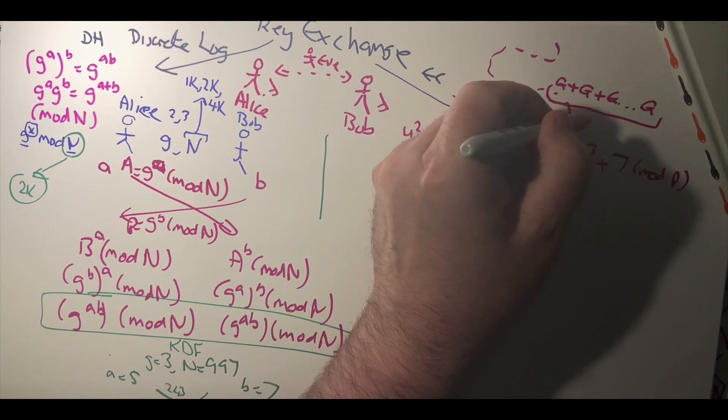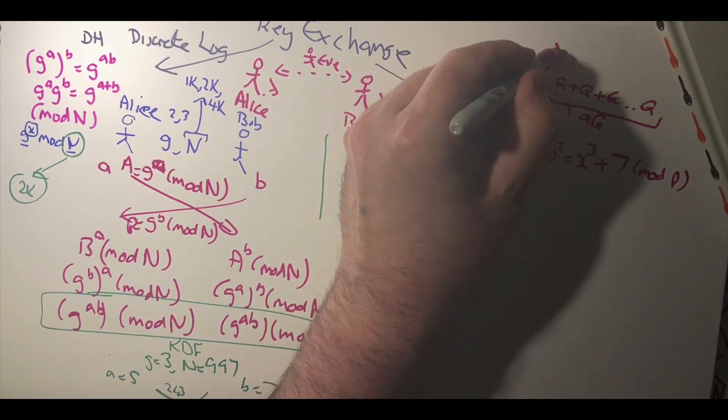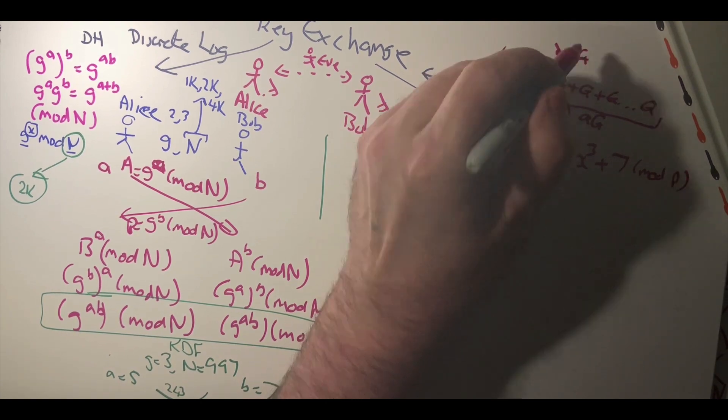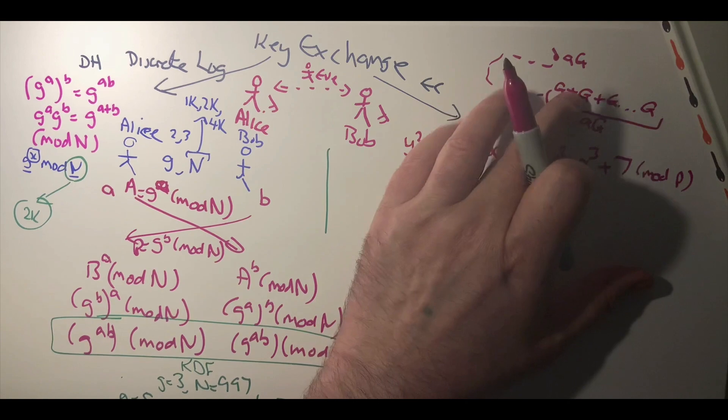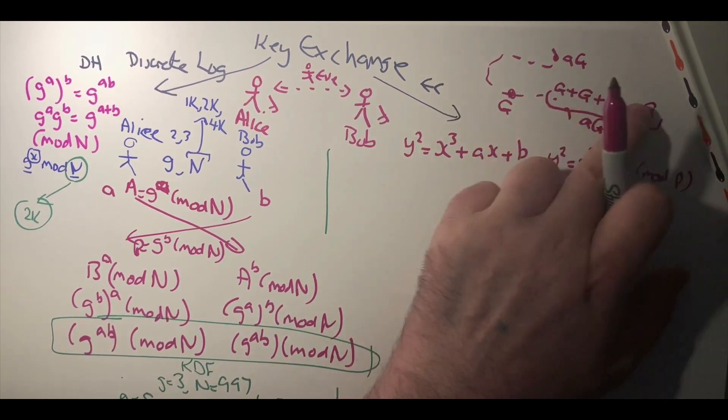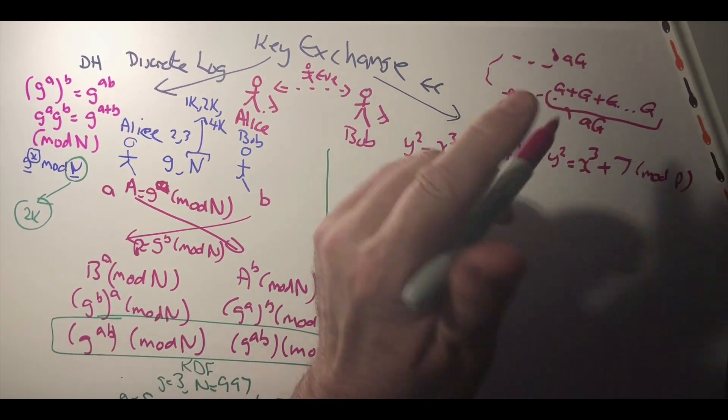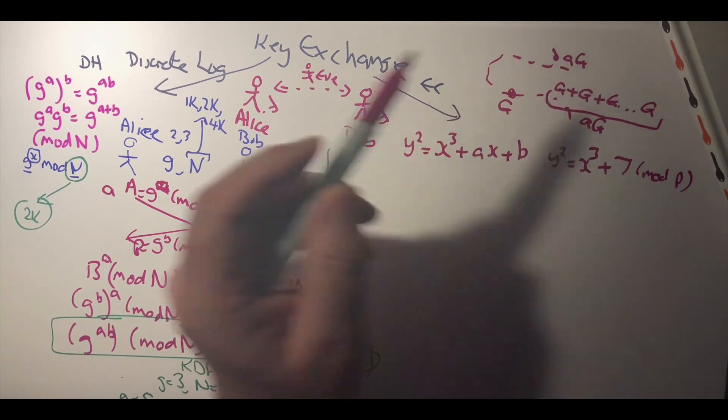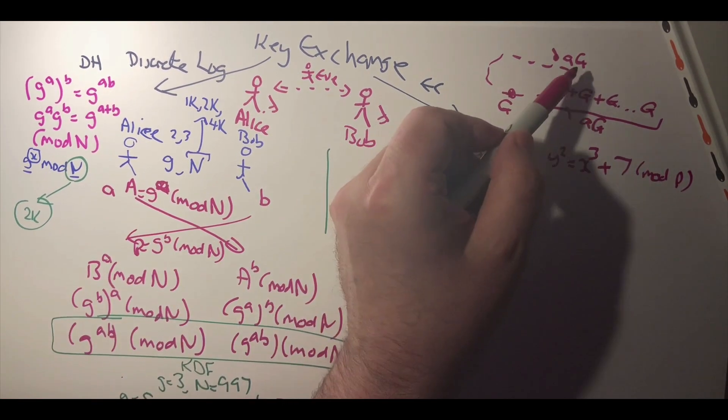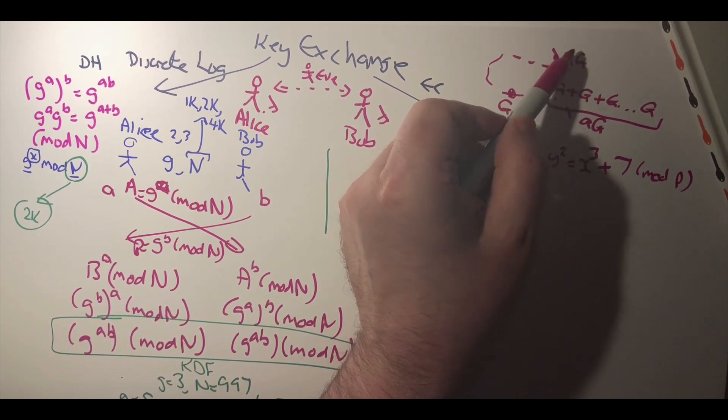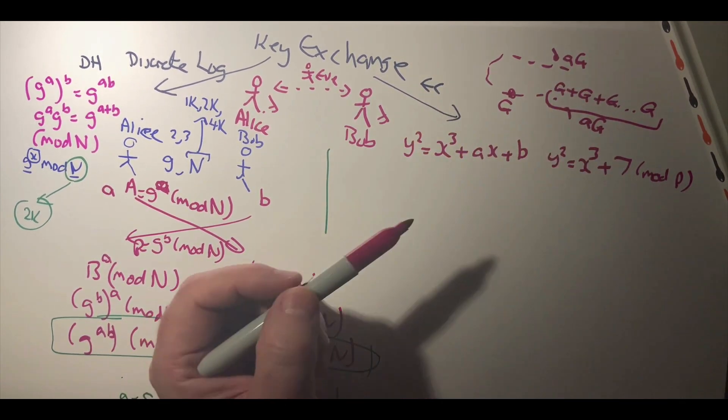So if we want to add it a times, then we end up with another point on the elliptic curve which is ag. It's really g added a times to give us this multiplicative function. So rather than having an exponential function, we have a multiplicative function with an elliptic curve.